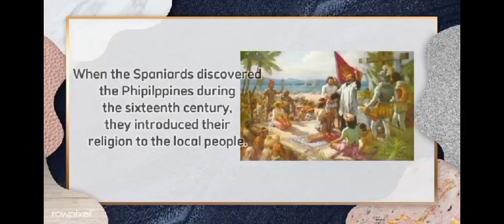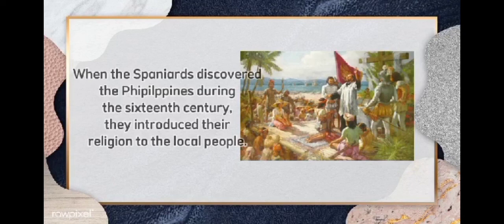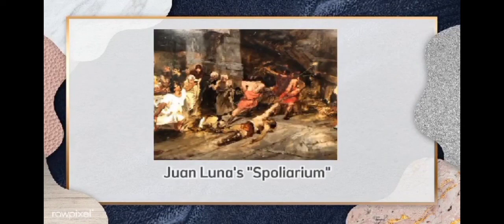When the Spaniards discovered the Philippines during the 16th century, they introduced their religion to the local people. Aside from acquiring resources, they had a goal to replace the existing indigenous cultural practices and beliefs of the early Filipinos. Art was used by the Spaniards to propagate their Christian faith, just as Western Europe at one point became the sole patron of the arts. Art became one of the avenues for Filipino patriots and nationalists. The most famous work expressing Filipino nationalism is Luna's Spolarium — a large-scale academic painting that garnered a gold medal, signifying that Filipino reformists could come at par with their European counterparts.